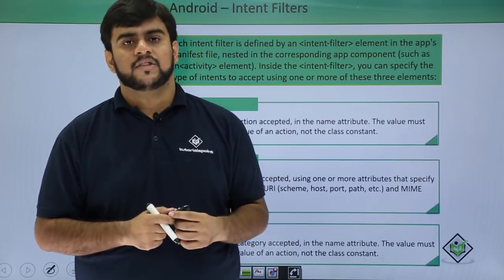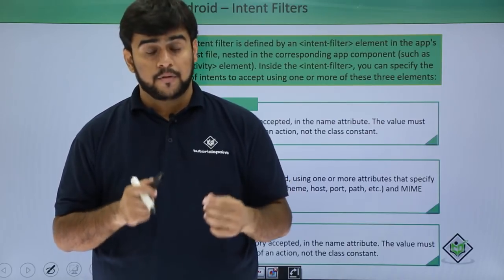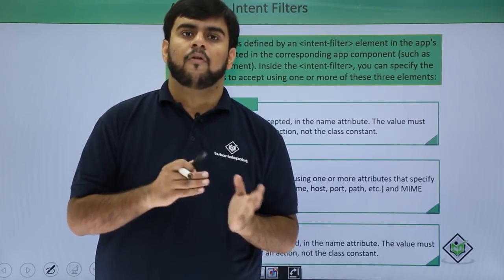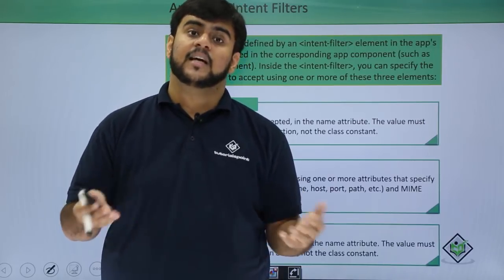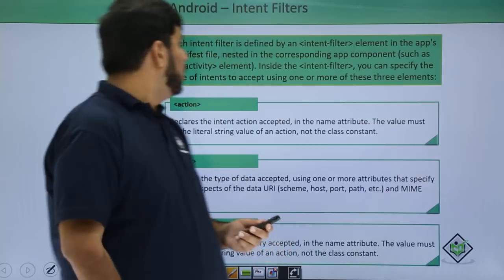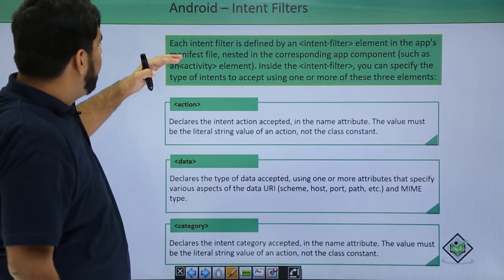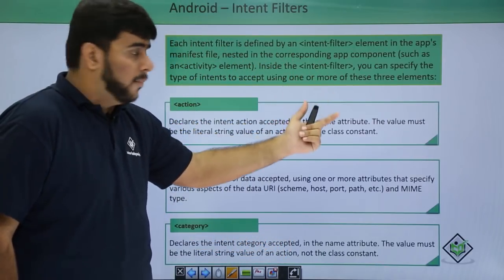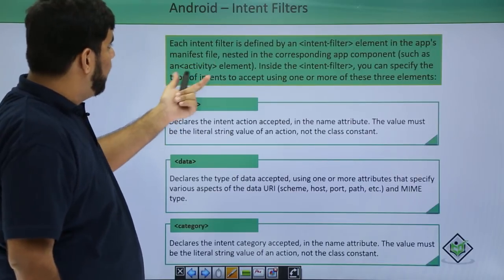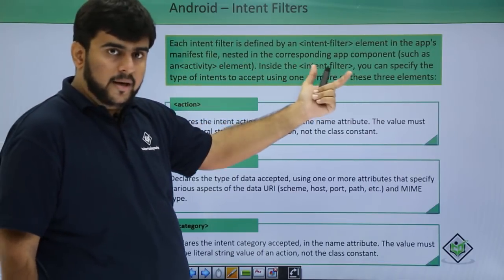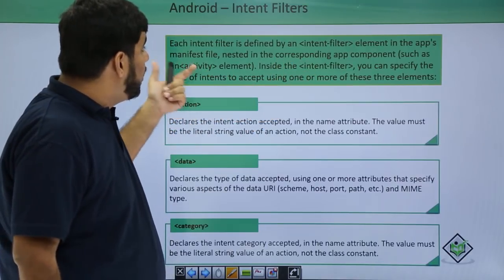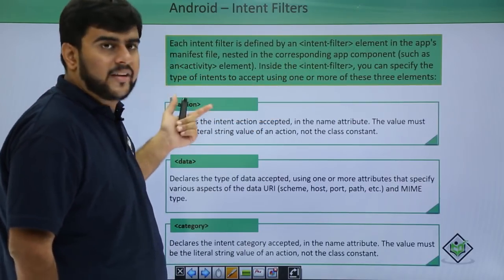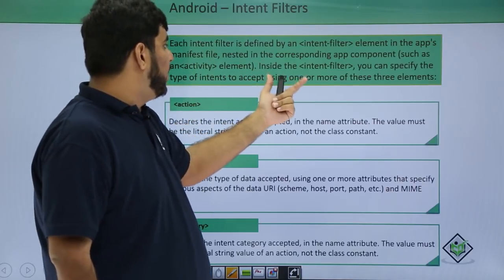At the end of this session we would be having a practical session in which we would be actually making our application fall in a category of a predefined intent filter that is action_dial. Each intent filter is defined by an intent filter element in the app's manifest file nested in the corresponding component. This component should always be nested in a component like activity or service.